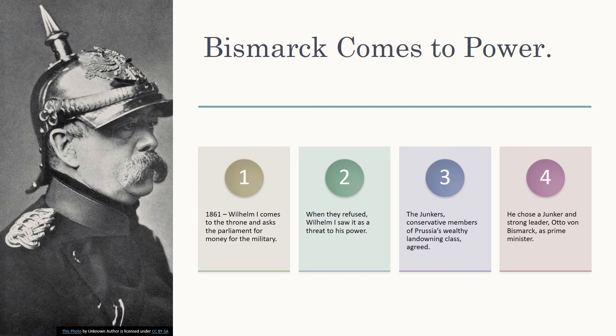Bismarck comes to power. In 1861, Wilhelm I came to the throne in Prussia. When he asked parliament for money for the military, they refused. Wilhelm I saw this as a threat to his power and turned to the junkers — conservative members of Prussia's wealthy landowning class. He chose Otto von Bismarck, a junker and strong leader, to be prime minister of Prussia.